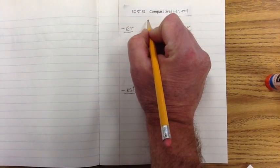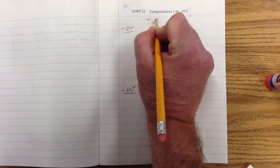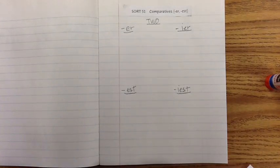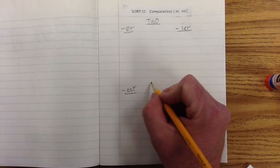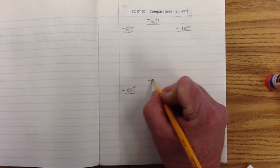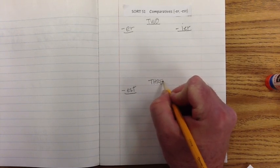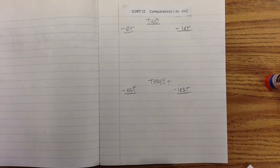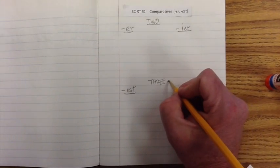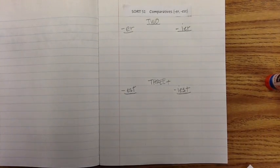So to help us remember that, I'm going to write in two. That means we're going to compare two things. And down below, right above the exemplars, I'm going to write three plus. That's going to let me know that I'm going to be comparing three or more. The plus means more. Three or more items that I'm comparing.